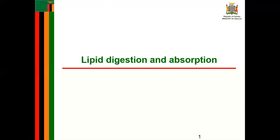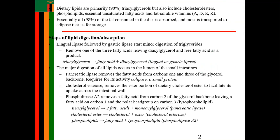Today in biochemistry we're going to look at lipid digestion and absorption. When it comes to lipid digestion and absorption, we take in about 90% of dietary lipids in the form of triglycerols, but this also includes cholesterol esters, phospholipids, essential unsaturated fatty acids, and fat-soluble vitamins — vitamins A, D, E, and K. These are mostly what we get from dietary lipids or from the foods we eat that contain lipid.